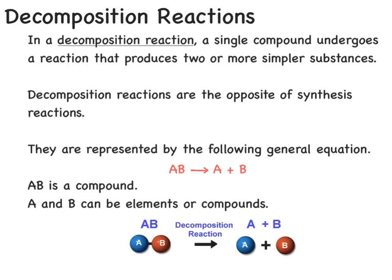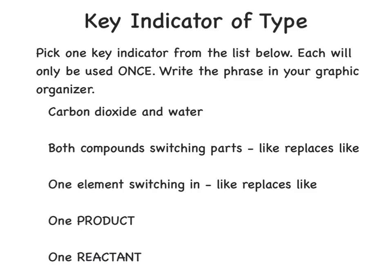A decomposition reaction is the opposite of a synthesis reaction. This is where a single compound undergoes a reaction that produces two or more simpler substances, and is represented by the equation AB yields A plus B. So we start with a compound AB and break it down. A and B can be either an element or a compound. One reactant is our key for a decomposition reaction.